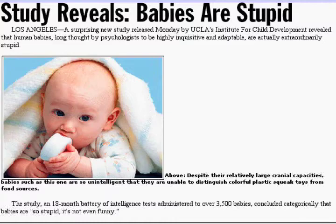Some of you might be fans of The Onion, a humorous newspaper. This is a joke article about babies being stupid. Starting off with this joke, it's actually related to the theme of this lecture about whether or not infants are stupid. The caption of this photo reads: 'Despite their relatively large cranial capacities, babies such as this one are so unintelligent that they cannot distinguish colorful plastic squeak toys from food sources.' Although we know that babies chew on things because they have really good senses in their mouth and that's their way of figuring things out. So that's the joke here, but it is the theme.